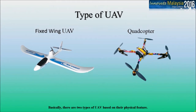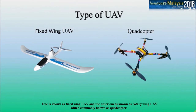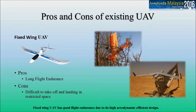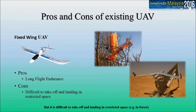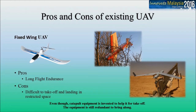Basically, there are two types of UAV based on their physical features. One is known as fixed-wing UAV and the other is known as rotary-wing UAV, commonly known as quadcopter. Fixed-wing UAV has good flight endurance due to its high aerodynamic efficient design, but it is difficult to take off and land in restricted spaces, for example in a forest, even though catapult equipment is invented to help it for takeoff.